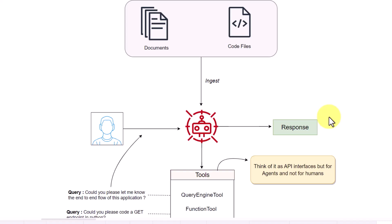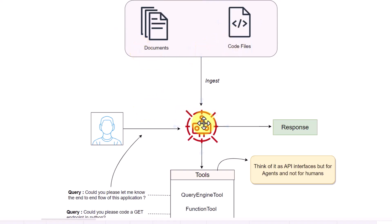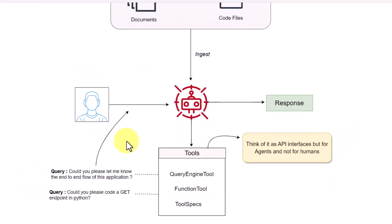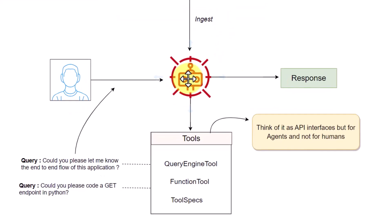Now let's see how agents help us. Suppose you have two kinds of datasets: one related to your documents and another could be some code files. You want to build an application where a user can come and ask some question — it could be related to documents or code files — and you want a single point of interface to interact with these. An agent can help you ingest this kind of data and let users ask queries. The agent would decide which particular tool it has to use to complete a specific task.